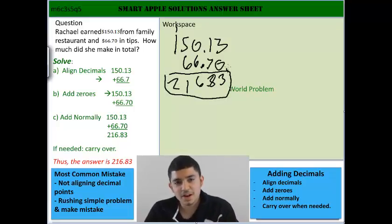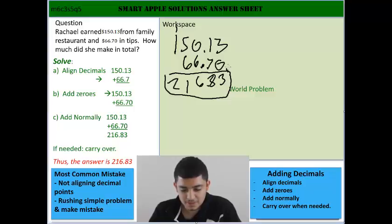Most common mistakes that you might have in this problem is not aligning the points, the decimal points, so that might have you mistake a point and then have you add the wrong decimals together.